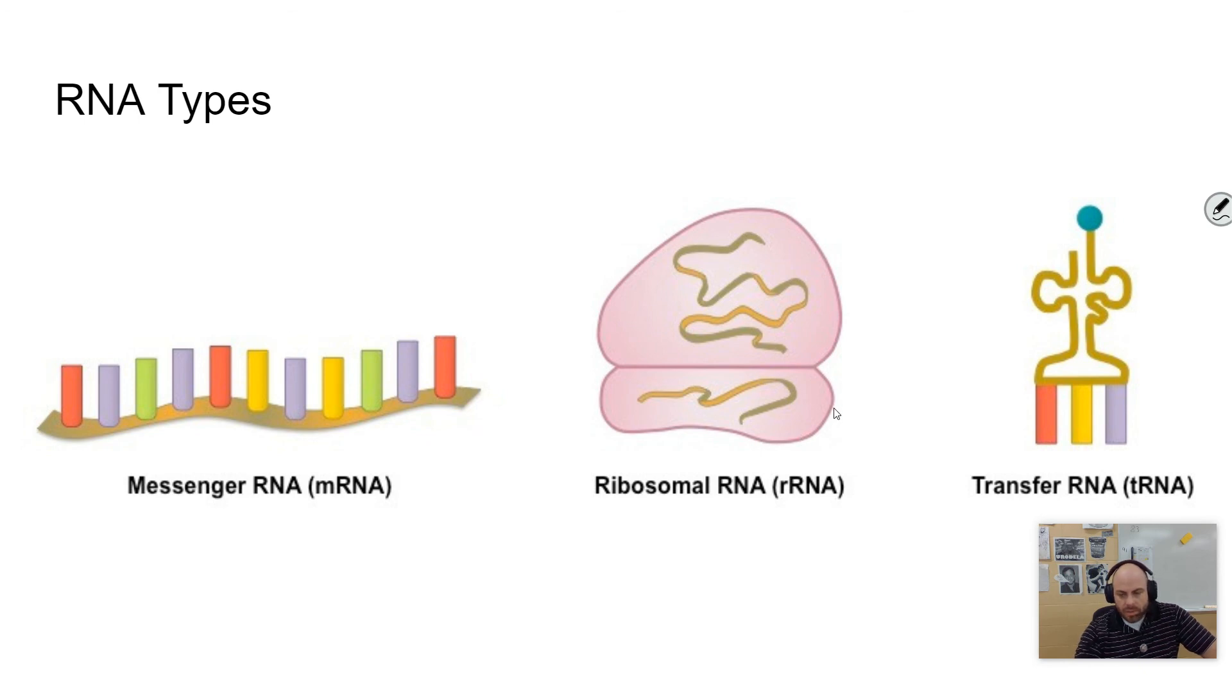Then there is rRNA, or ribosomal RNA, and this is a portion of the components of a ribosome. Ribosomes are made up of proteins and this RNA, and it's necessary in order for the messenger RNA and the ribosome to line up during translation.